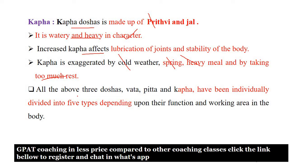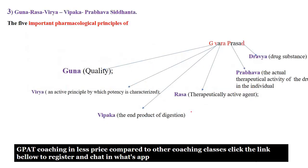All three Doshas — Vata, Pitha, and Kapha — are individually divided into five types depending upon their function. These three Doshas are very important in the Ayurvedic system. Another important theory is Guna, Rasa, Virya, Vipaka, and Prabhava Siddhanta.